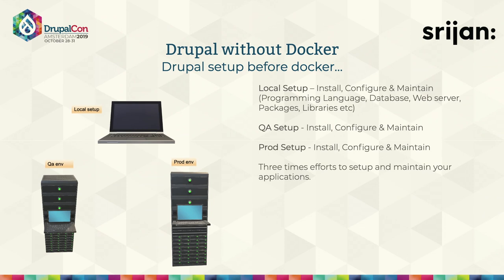So, Drupal without Docker. Earlier, most teams have three kinds of environments: local setup, QA, and production. Production is the last destination for any development; QA is used for sanity checks, pre-prod sanity, and UAT. For local setup, the basic steps are to configure PHP, MySQL, and Apache. Once you push to QA, you have to set up that environment again, and the same for production — essentially a 3x effort for the same thing. If you add an integration environment, that's 4x effort.